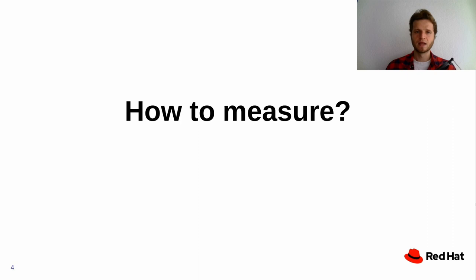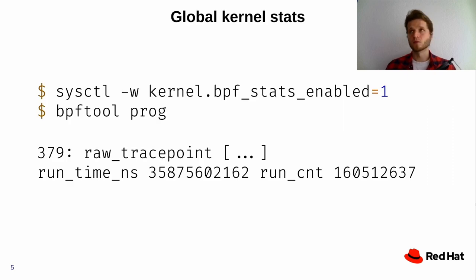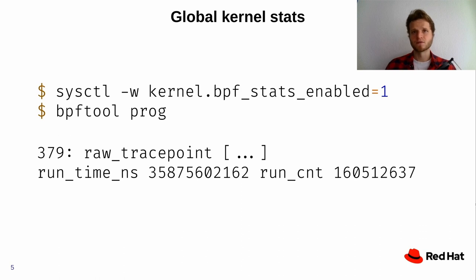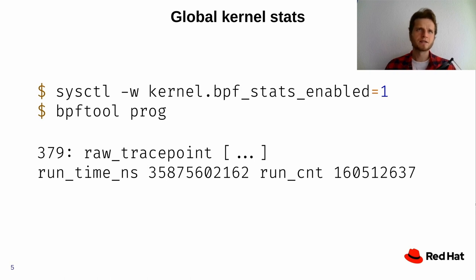The first and probably easiest approach is to start collecting global information about your BPF programs. Fortunately the kernel collects this for us — we just need to enable one particular parameter. When we inspect our BPF programs using bpftool, alongside normal information we also get total run time and run count. These provide ballpark averages useful for sanity checks or cross-checking other approaches. They're not detailed enough for proper analysis, but it's sort of an uptime-type tool for BPF.